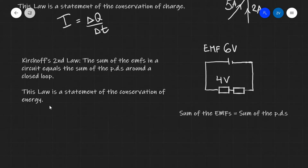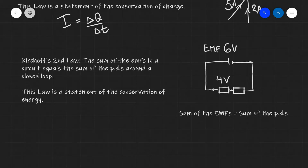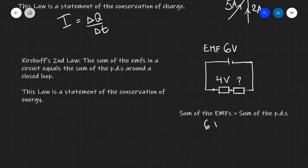What does that actually mean? Imagine that we have a simple circuit in which we have a cell with an EMF of 6 volts. This is connected to two resistors. Let's say we've taken a voltmeter and measured that the PD around this resistor over here is 4 volts. What will the PD around the other resistor actually be? Kirchhoff's second law tells us that the sum of the EMFs, which is 6 volts, will equal the sum of the PDs.